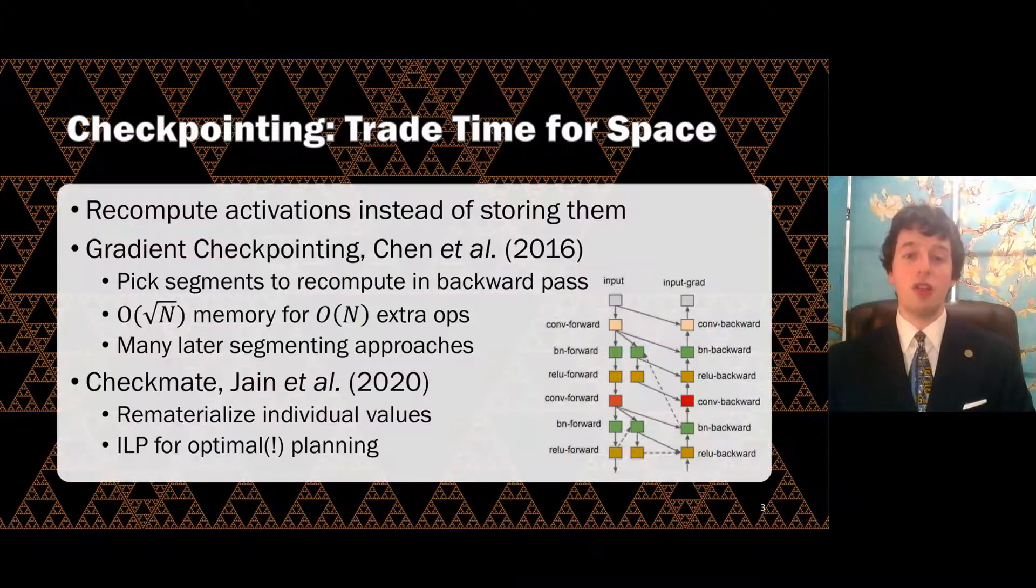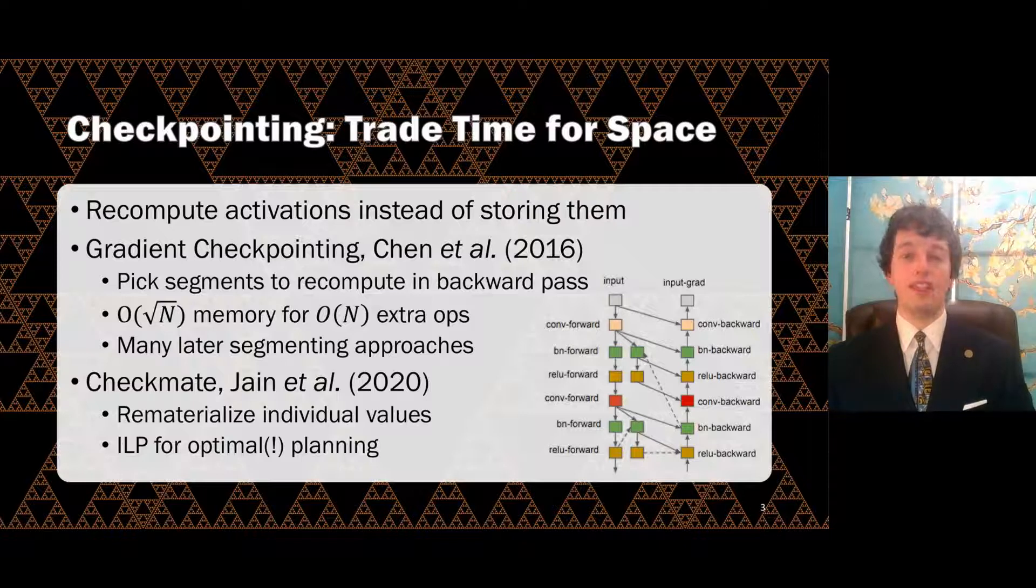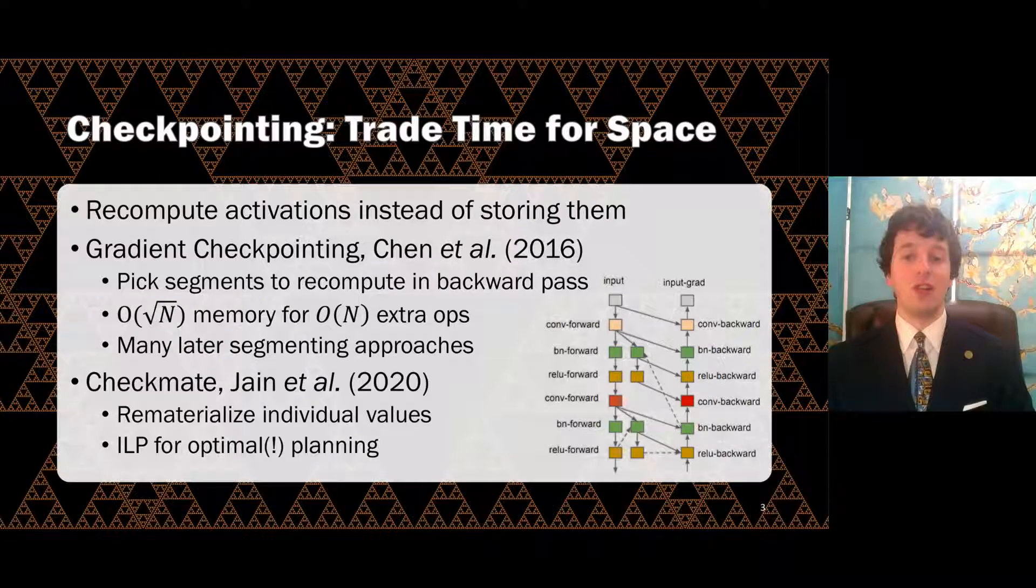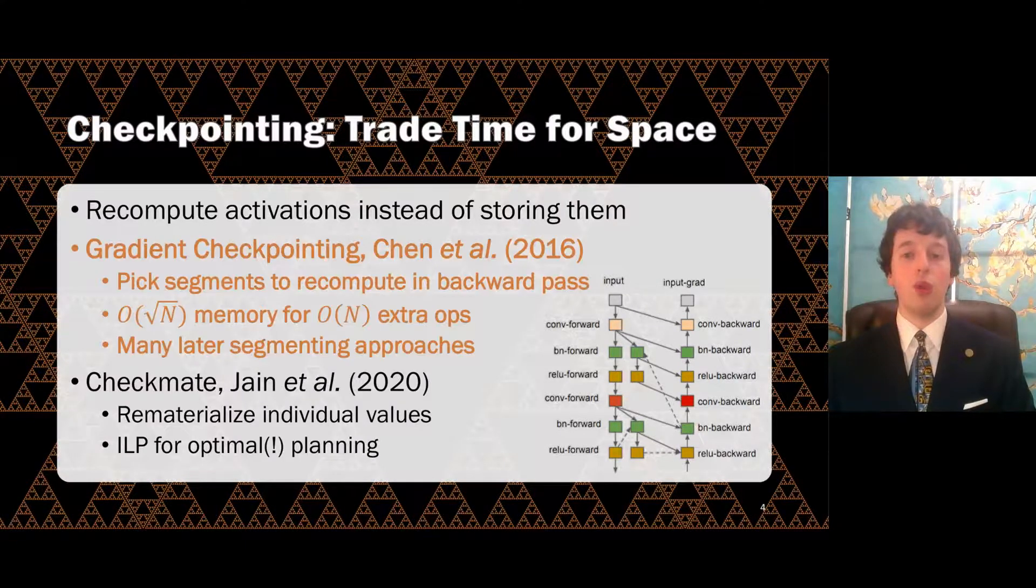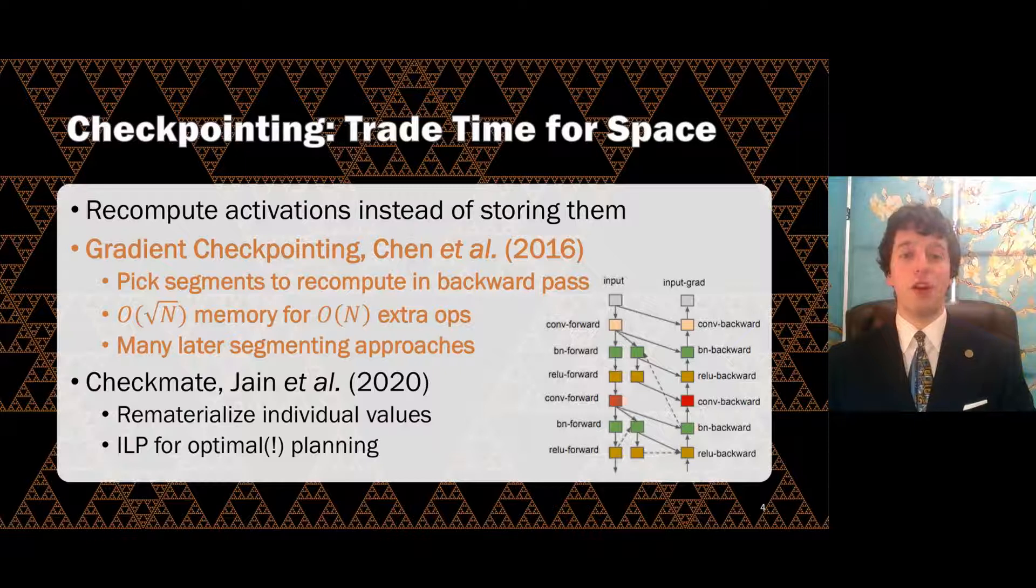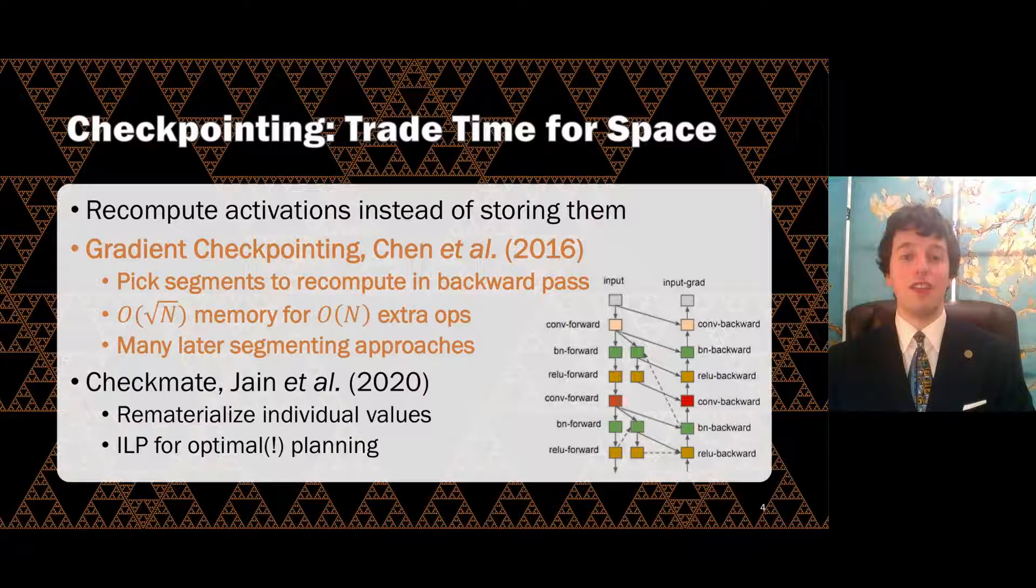One means of reducing the amount of memory required for training is checkpointing, which is the focus of our work. Checkpointing techniques trade time for space by freeing intermediate activations and later recomputing them. Recent work in deep learning has shown that these trade-offs can be favorable. For example, our co-author Tianqi Chen helped develop a scheme for dividing data flow graphs into segments that are recomputed during the backward pass.